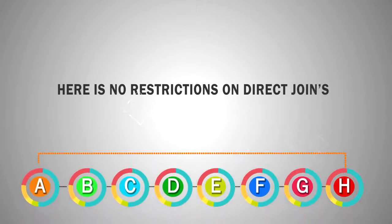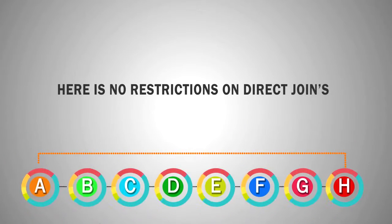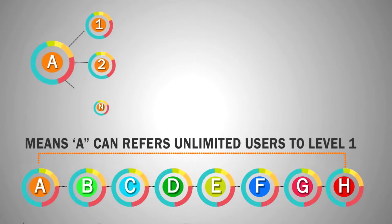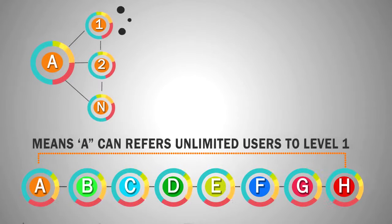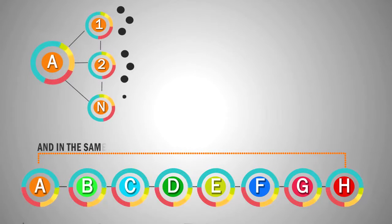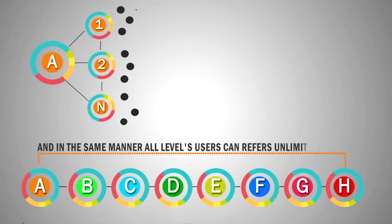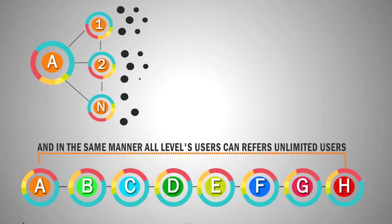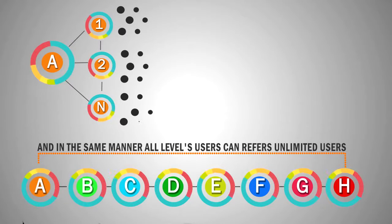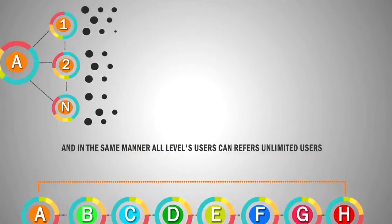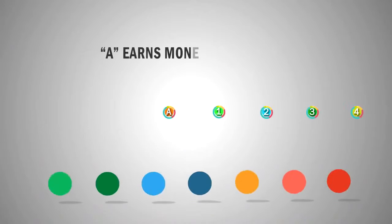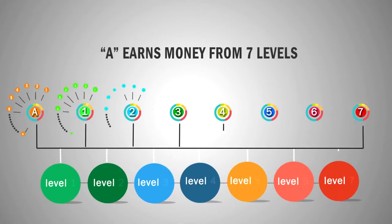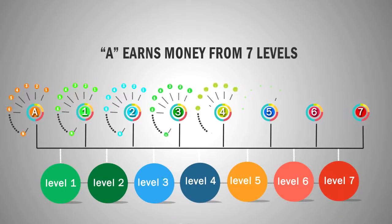Remember, there is no limitation on joining at level 1 — you can join as many friends directly. It means A can join unlimited friends at level 1. In the same manner, every person can refer unlimited friends to join with him, and you can earn up to 7 levels and can earn millions.